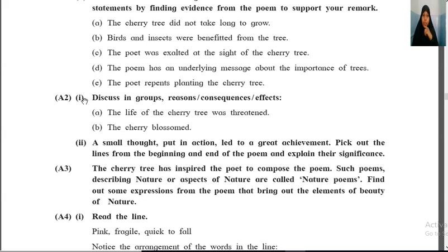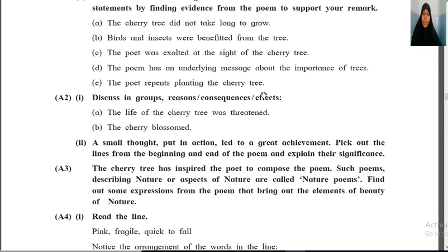After that, discuss in groups: reasons, consequences, and effects. The life of the cherry tree was threatened — the reason was animals: the goat ate it up. Human beings — the grass cutter came and split it apart. And the weather: because of the monsoon it had been completely destroyed. The consequence was that it was completely destroyed. But still, again, it grew, overcoming all the adversities. The effect was that it had to overcome all the adversities and finally, after seven years, it had grown into a six feet tall tree.